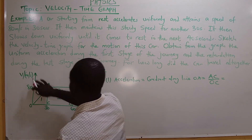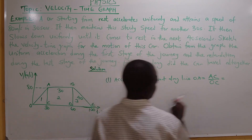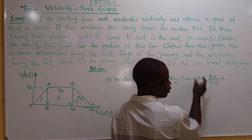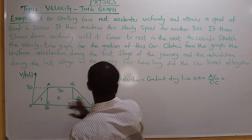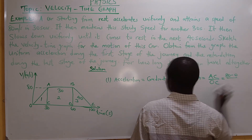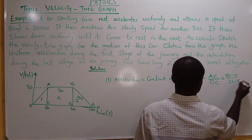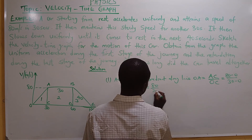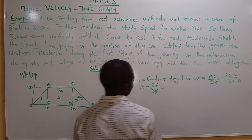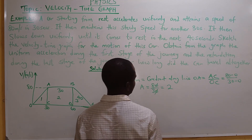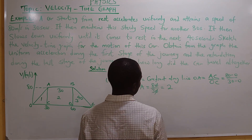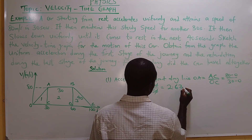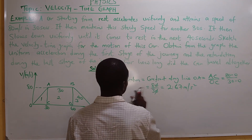Acceleration equals change in velocity divided by time, which is (80 minus 0) divided by 30. That gives 80 divided by 30, which equals 2.67 meters per second squared.